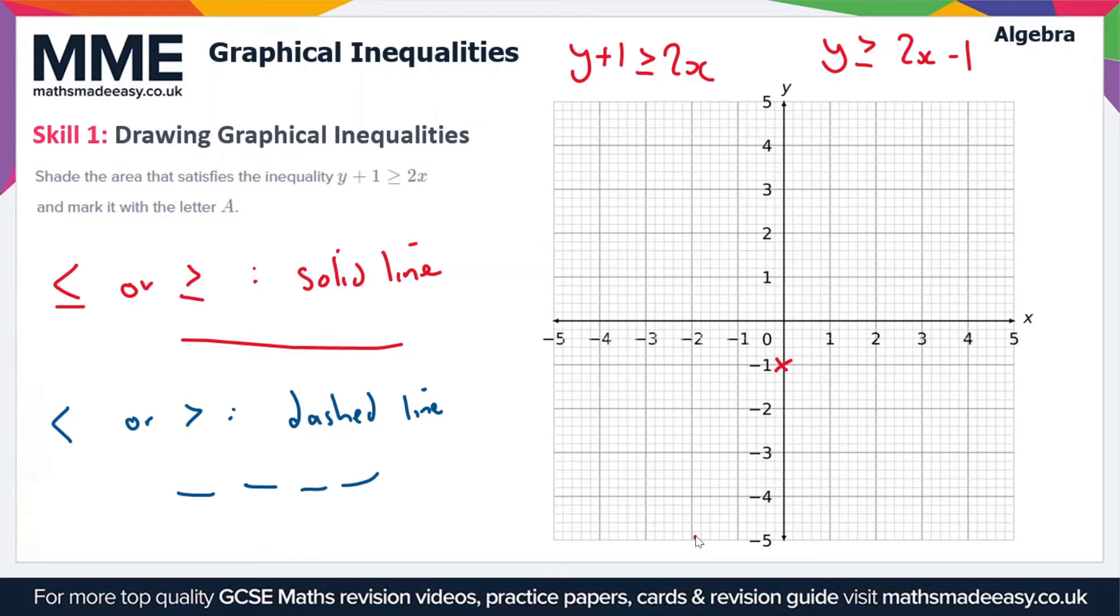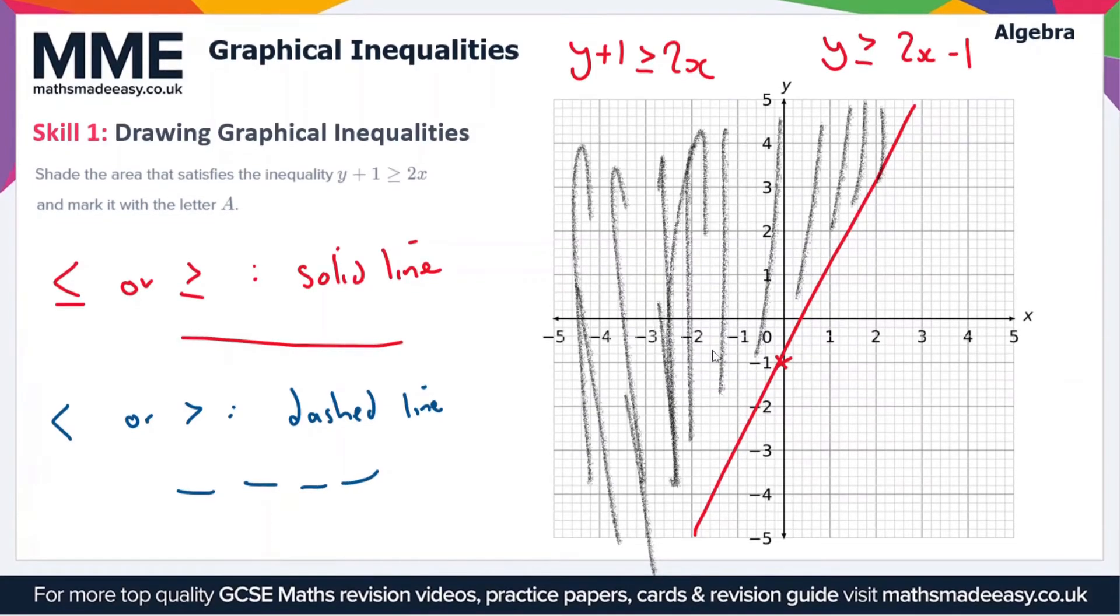Now the final thing to do is to shade the area that satisfies the inequality. As this is a greater than inequality, we need to shade the area above the line. So that's going to be this area here.